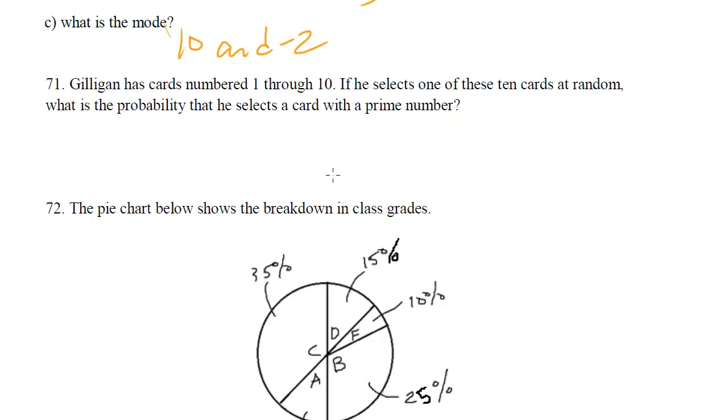Gilligan has cards numbered 1 through 10. If he selects one of these 10 cards at random, what is the probability that he selects a card with a prime number? Well, we know it's out of 10s, we can put 10 on the bottom. We just need to figure out how many choices satisfy the requirement that it's a prime number. How many primes are there between 1 and 10? Well, there's 2, 3, 5, and 7. Those are the only primes. So we've got 4 choices out of the 10, so it's 4/10 probability, which reduces down to 2/5.